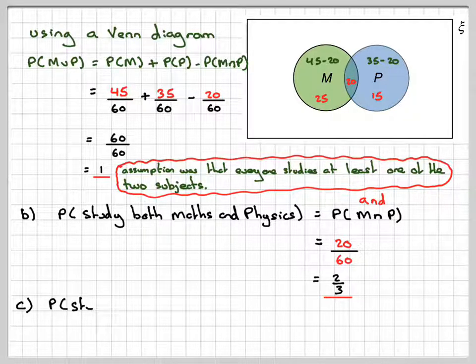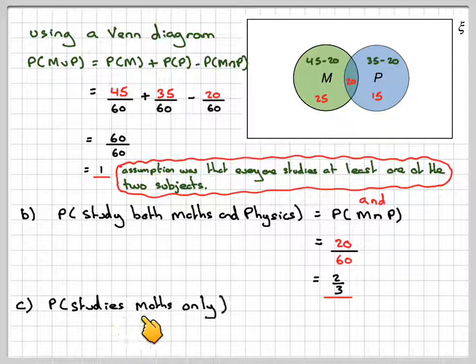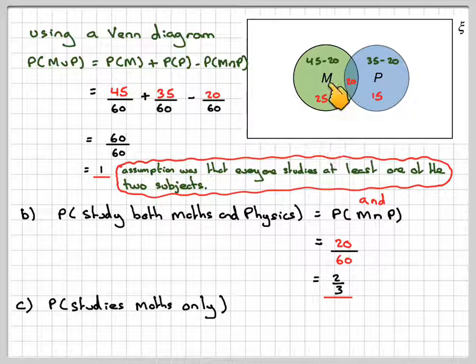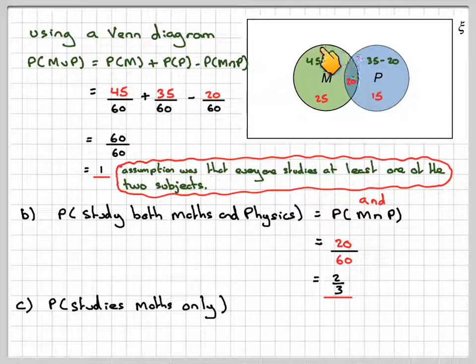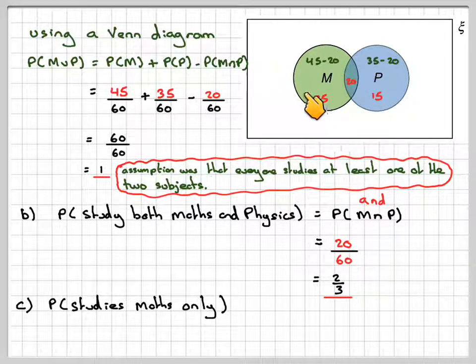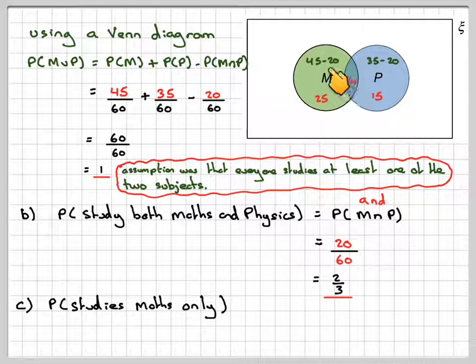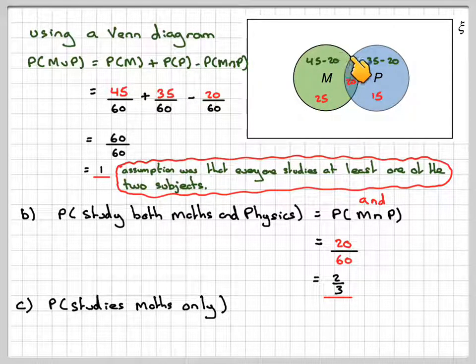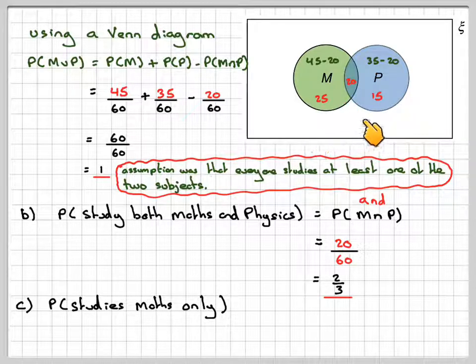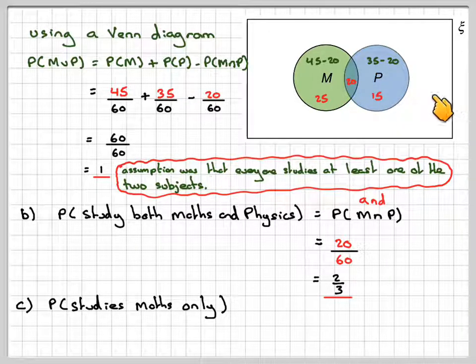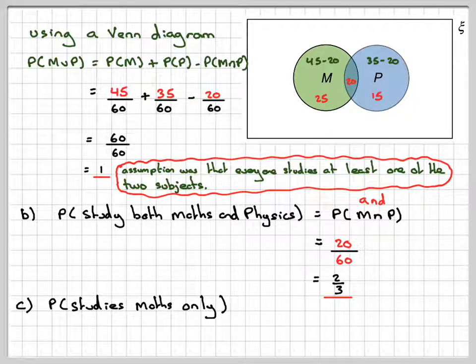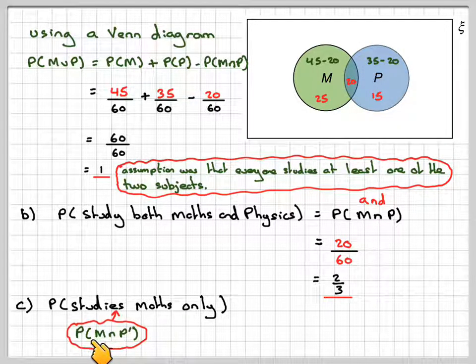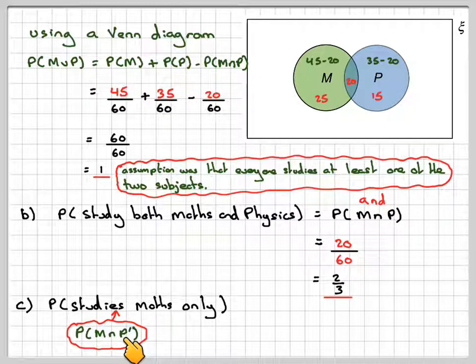And the last part, we were asked to find the probability that studies maths only. In the Venn diagram, it's represented by this bit only. So the answer is going to be 25. In set notation, that's going to be all those in M intersected with not P. So you really need to know a little bit about your intersection of sets here. The set notation for that is probability of M intersected with not P.